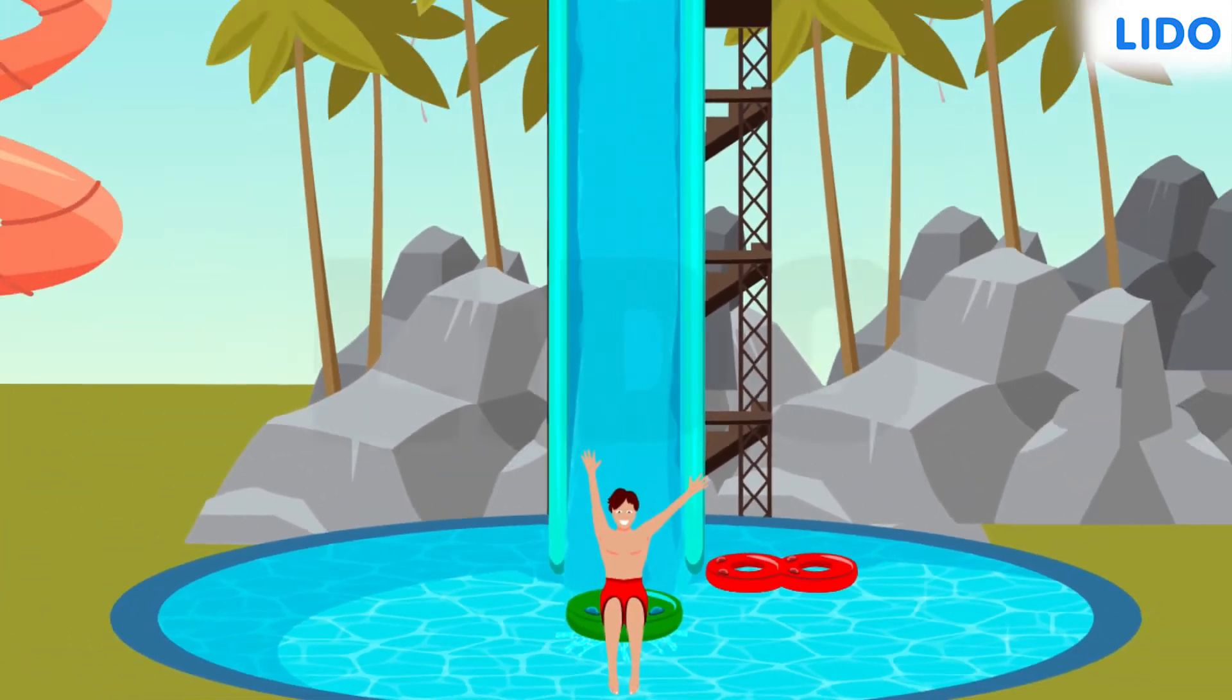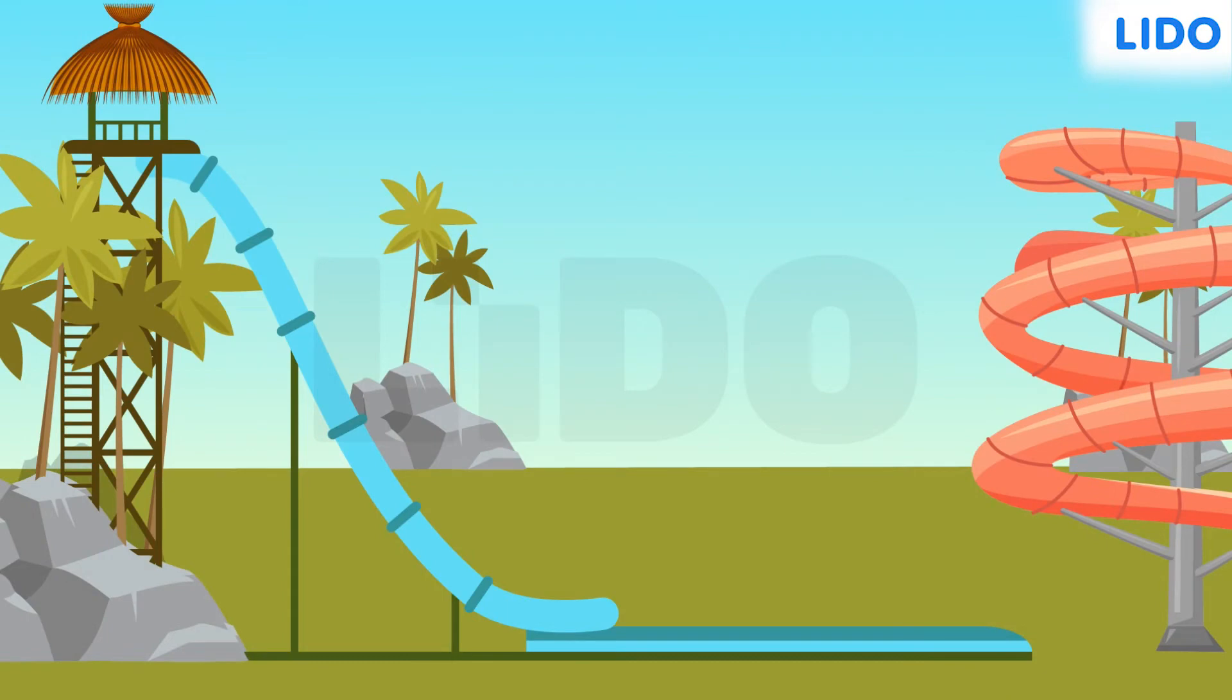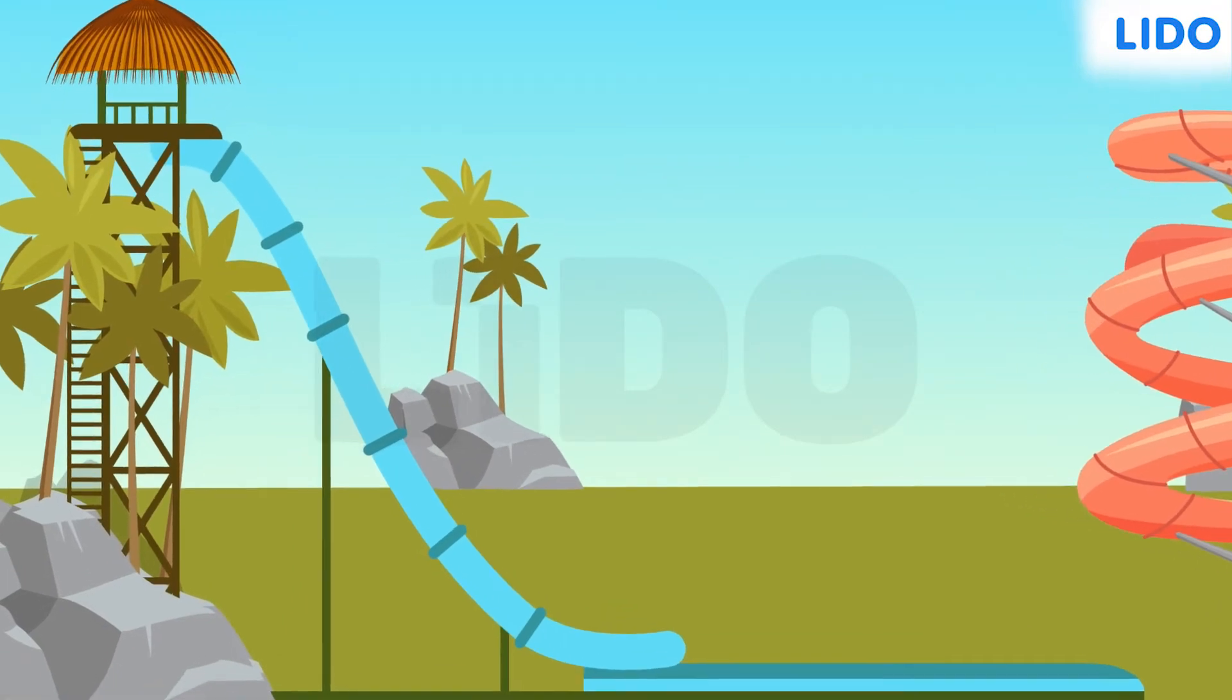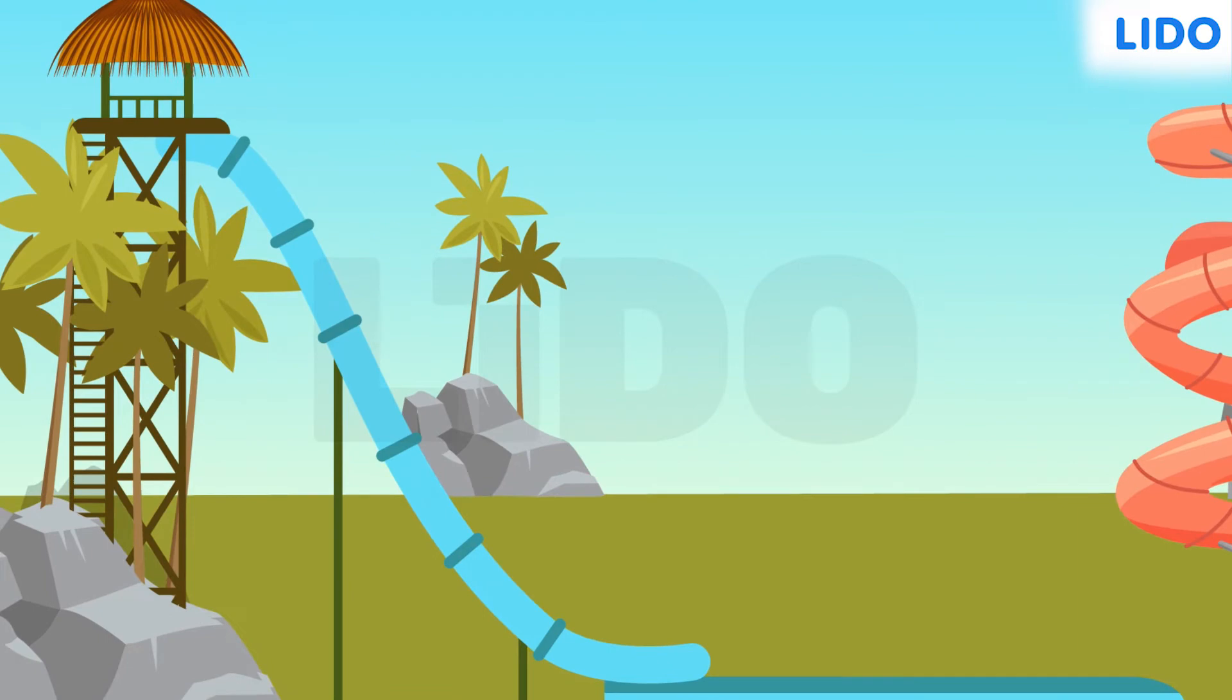Amazing! Let's have a side look and watch the fun. Oh, the slide looks very steep. The tilt or the slant is due to the angle made by the slide with the horizontal.